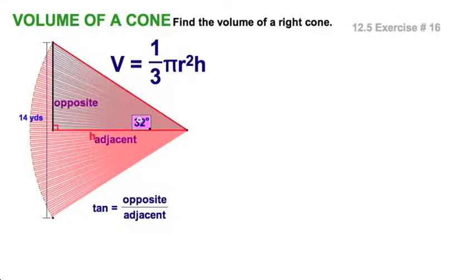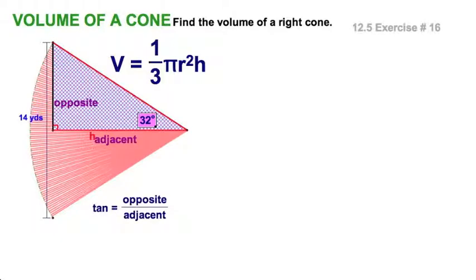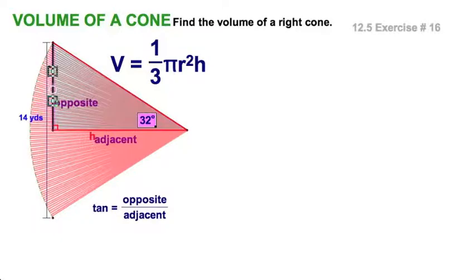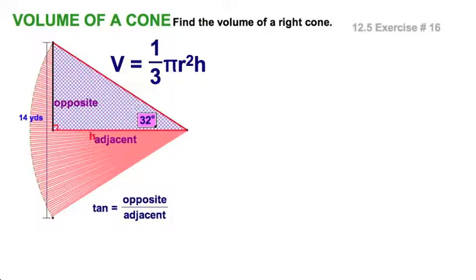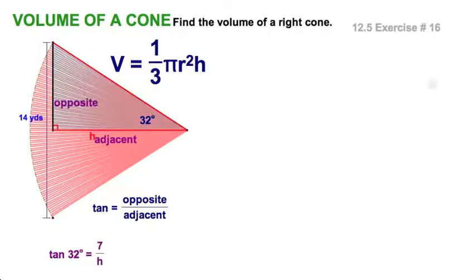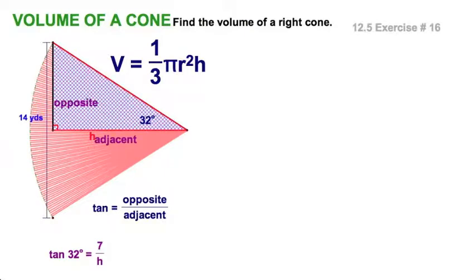And the opposite side over the adjacent side would be the tangent function. And again, you can see over there, we know the opposite side is the radius. That's 7 yards. And the adjacent is our unknown. So, let's write it that way. And again, tangent of 32, this angle, is 7 over h, my unknown.